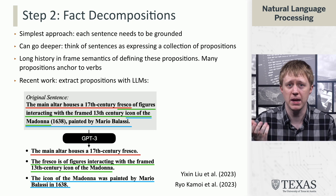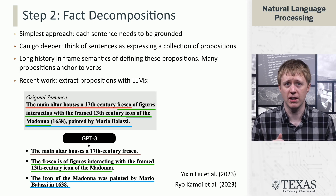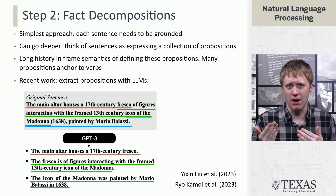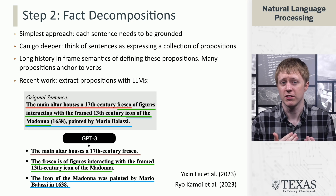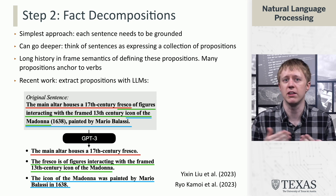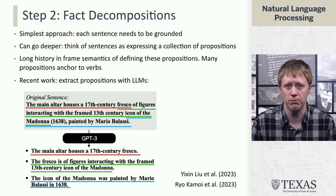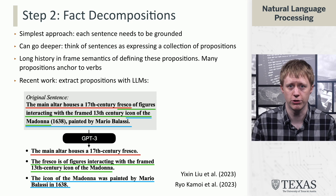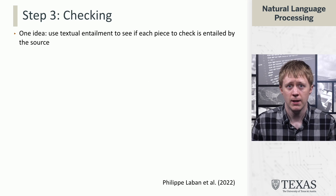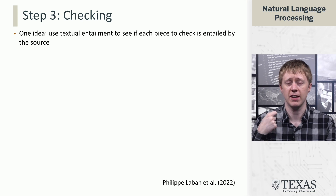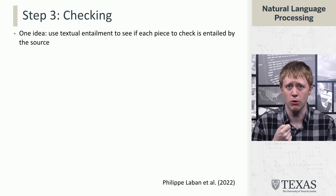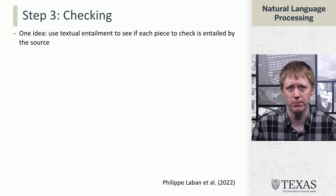There are other pieces we could use as well — things that the sentence presupposes. For example, when you talk about the main altar, we are presupposing that an altar exists. We're not going to write that down in our decomposition, but what that shows is that there are many different ways to do this. What I'm showing is not the authoritative right way — it's just one way of roughly breaking this down. A lot of current systems for doing this are using large language models in order to do it. Once we've got all these units of meaning, how do we check that they're correct? One idea is to use textual entailment to see if each piece is entailed by the source.